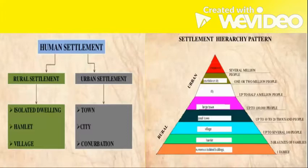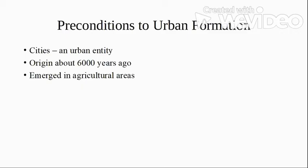There are two categories of human settlement: rural settlement and urban settlement. What are the preconditions to urban formation? First is the city — cities are the basic concept of an urban settlement. Cities developed around 6,000 years ago, although they are more commonly known from around 300 years ago. Cities have always emerged in agricultural areas where there is plenty of production, because they need food for their population.